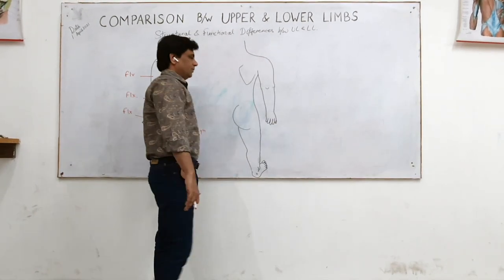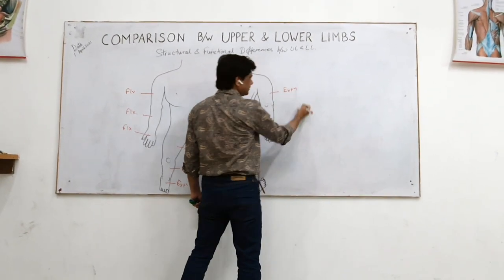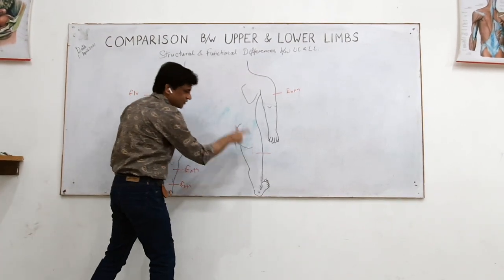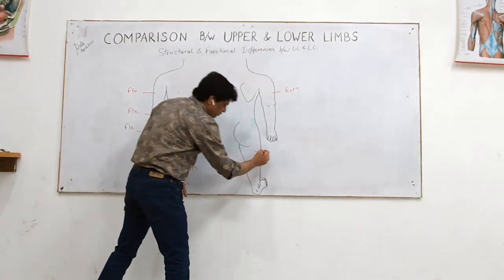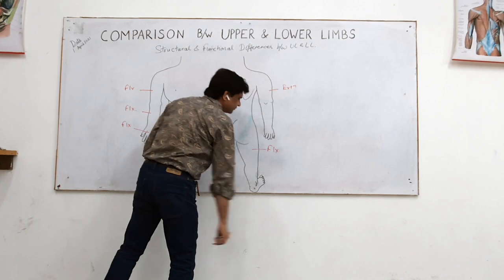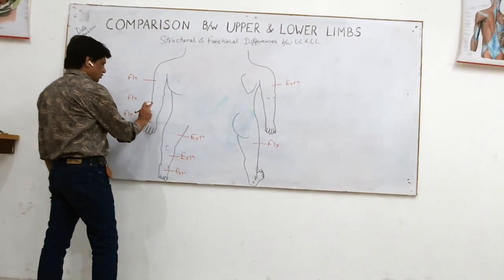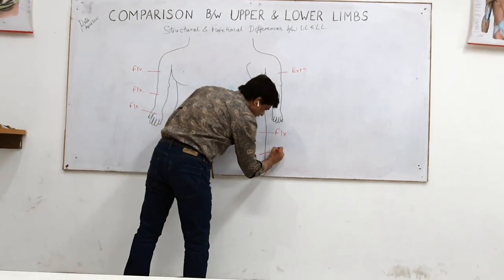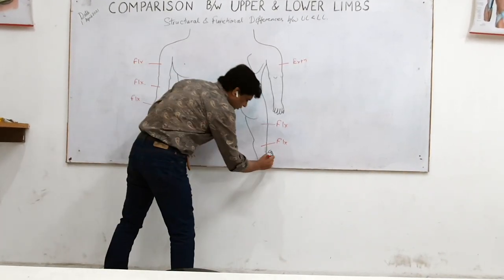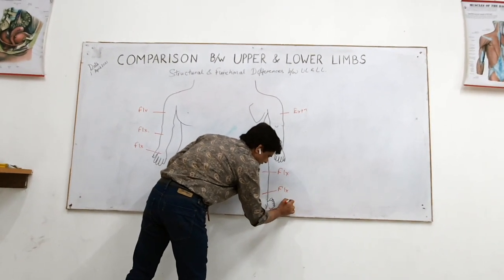The back of the arm is the extensor compartment, homologous to the back of thigh. So the back of thigh is homologous to the front of arm — this compartment will be the flexor compartment. The back of the leg is homologous to the front of the forearm, so the back of leg will also be the flexor compartment. The palm is the same as the sole — so in the sole the muscles will all be flexors, causing flexion of the joints ahead.